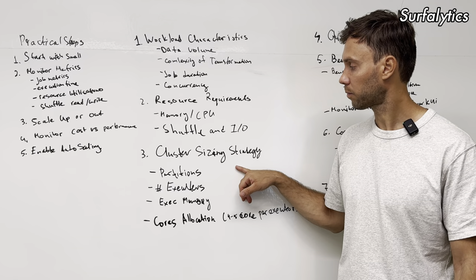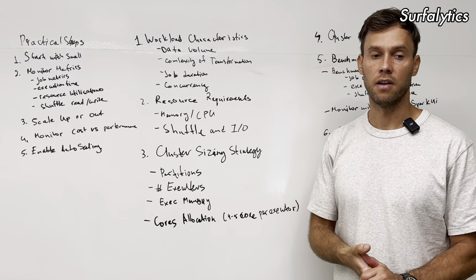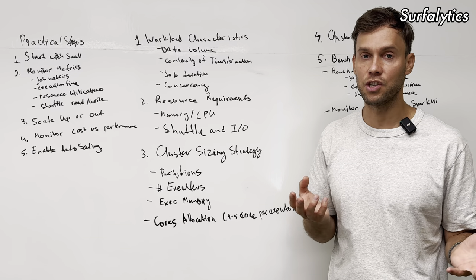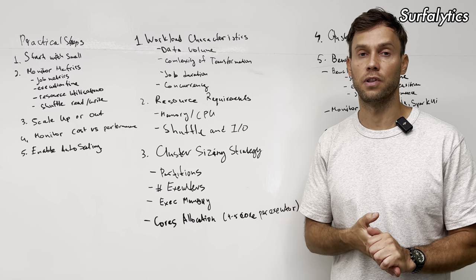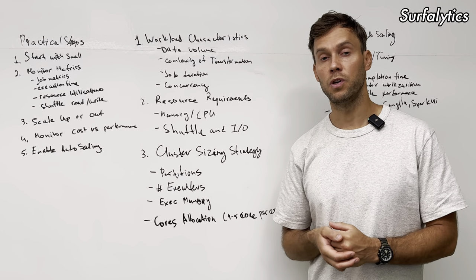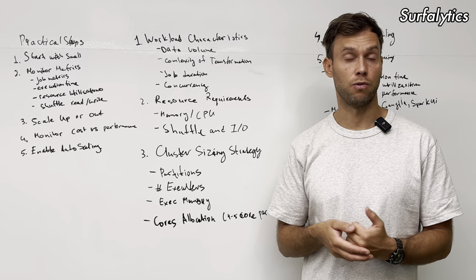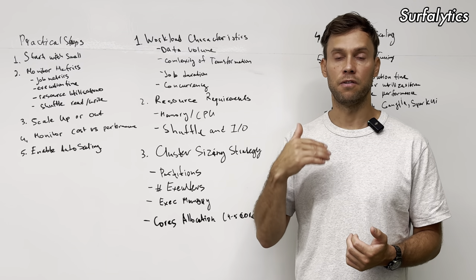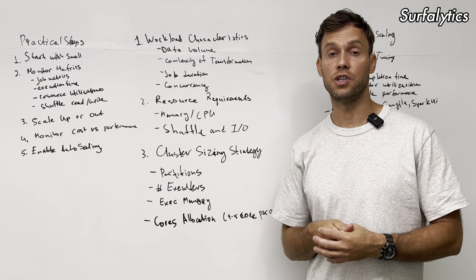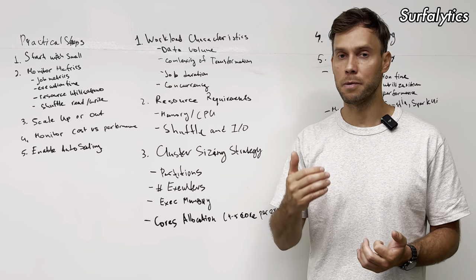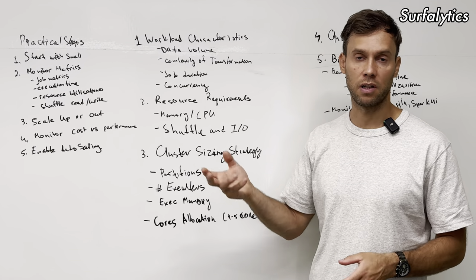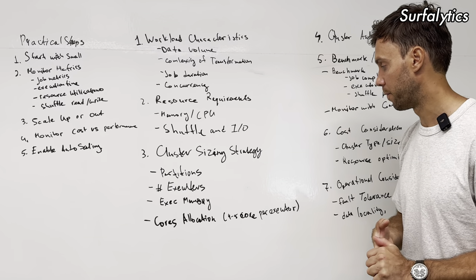In terms of cluster size strategy, it really depends on partitions. If we have one 10-gigabyte file and want to read it with no partitions, it's hard to size a cluster to process that big file efficiently. It's better to break files into chunks using partitions — especially for time-series data, partitioned by day, hour, or month — and then process one partition at a time. Number of executors and execution memory matter too: we can estimate how many nodes and executors we have. We can also estimate memory and CPU assignments. According to Spark best practice, we want around four to five cores per executor.